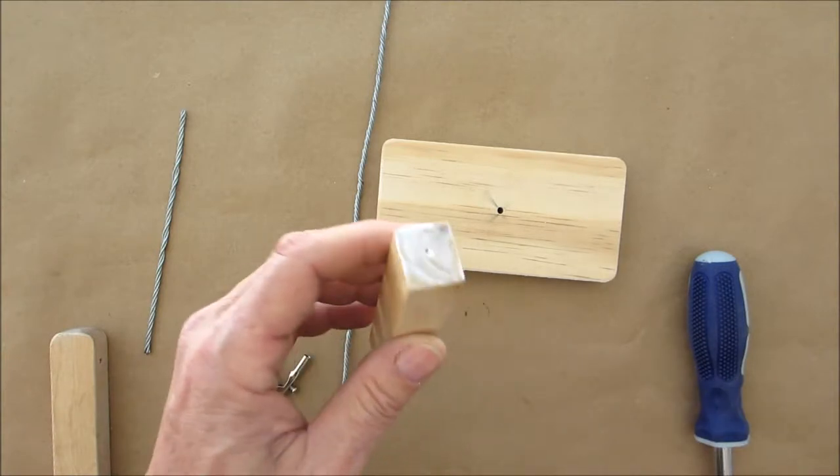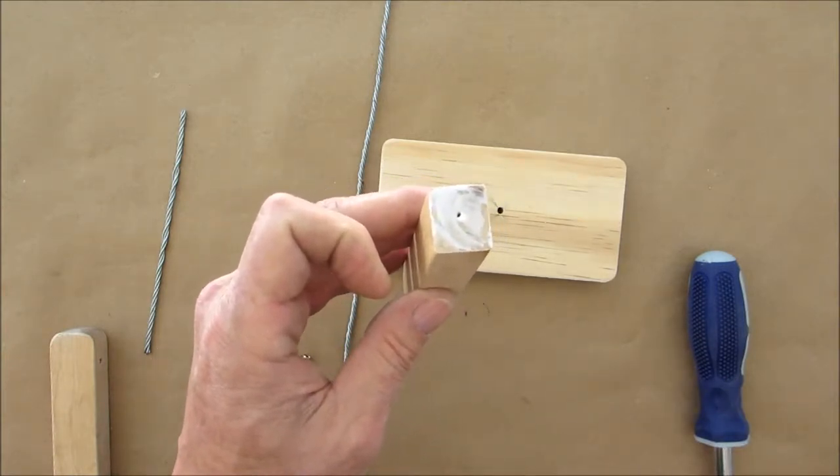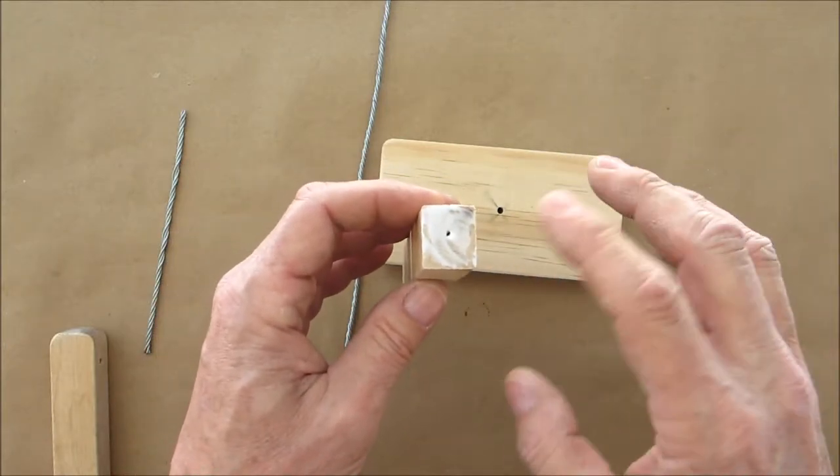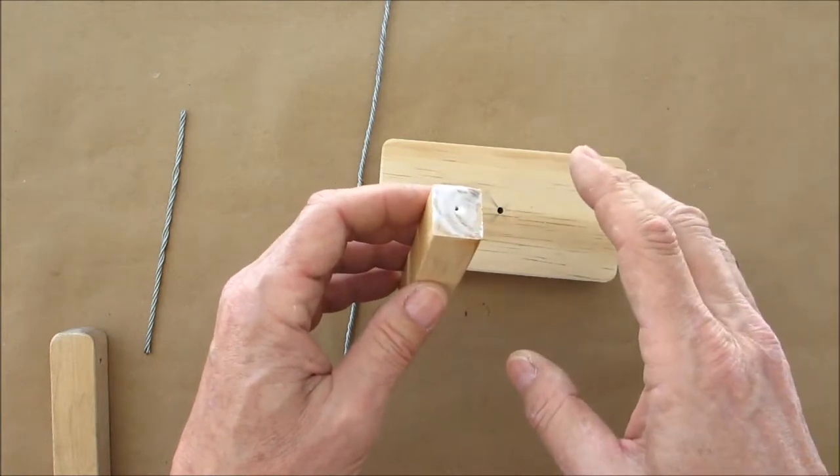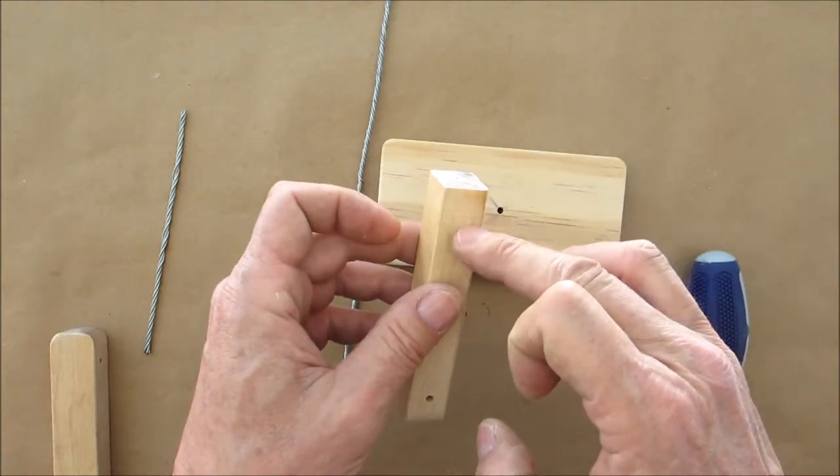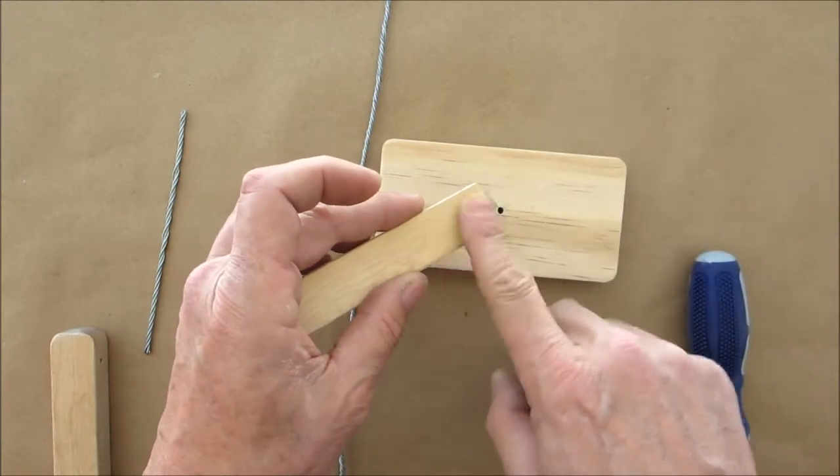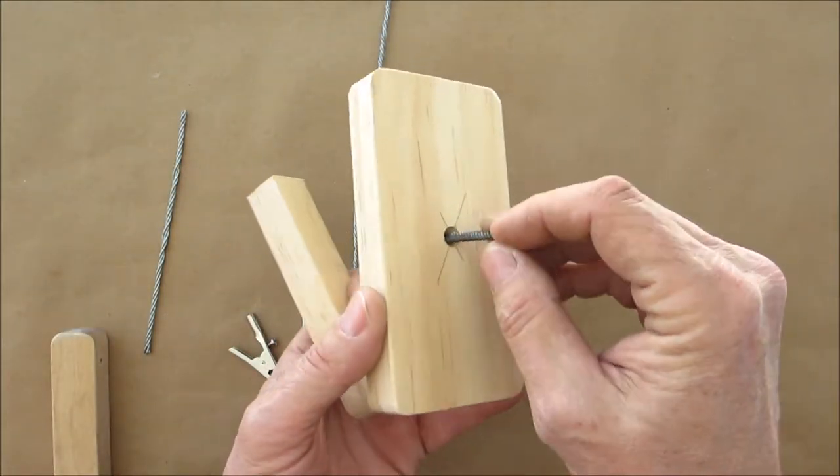All right, so the next step, get yourself a little wood glue. Normally the end grain absorbs the glue a lot faster, and a good practice to do is if you weren't going to be screwing this together was put the glue on here, let it sit for 10 or 15 minutes, and then put some more glue because it absorbs faster into the end grain versus on the top. But since we're going to screw it together it doesn't matter. So we have our countersink.